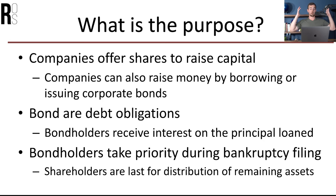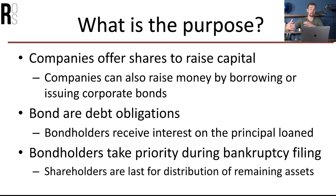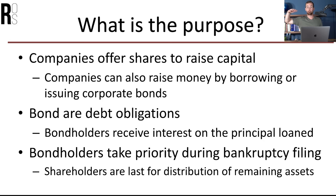So if the company goes insolvent and they go under and there's a liquidation, bond holders are going to get paid back first before shareholders, because that is considered to be a debt obligation, and debts have to be paid back before any owners of the company actually get paid. Shareholders are last for distribution of remaining assets. There's even something called preferred stock versus common stock, which means that common shareholders are lowest on that list to receive money.